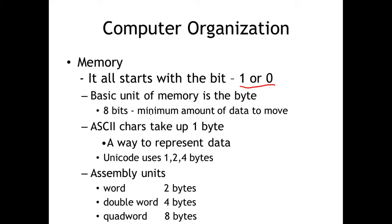Typically, when it comes to moving data around in the system from the CPU to the registers and into memory, the basic unit is the byte — defined as eight bits. That is typically the minimum amount of data that we can move. Different systems may actually have a different basic unit; maybe it's two bytes, maybe it's four bytes. But for our purposes here, the byte is that basic unit.